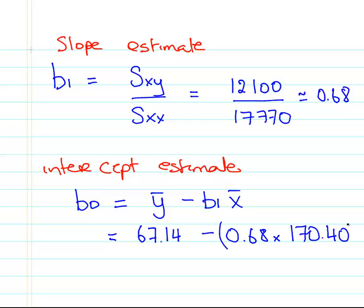Let's put that together. That is 67.14 minus B1 is 0.68 times 170.4. When I work that out, and again, I'm just being a little bit not so careful in my calculations, but you should get numbers close to this. My intercept estimate is minus 48.87.